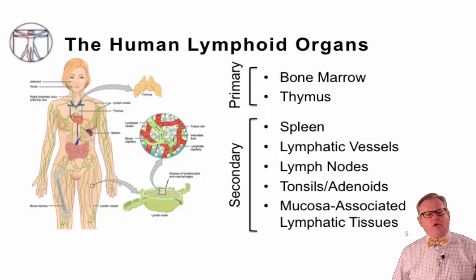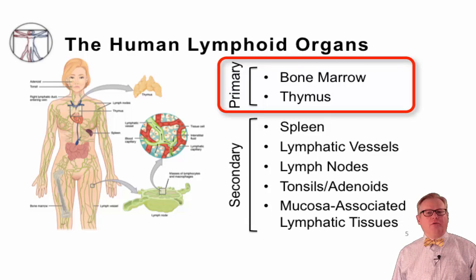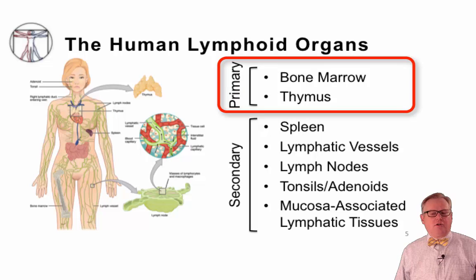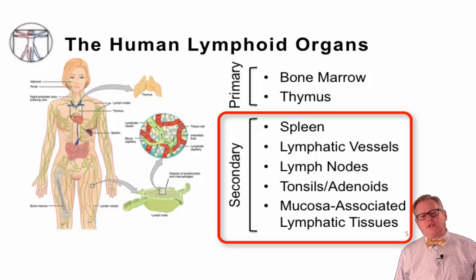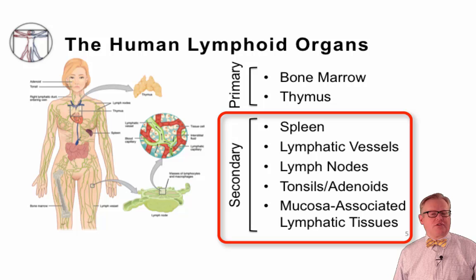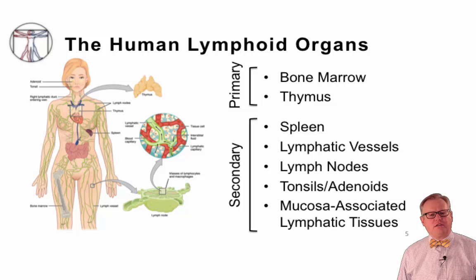The human lymphoid organs can be grouped into two major groups. The primary lymphoid organs are the sites at which all immune cells are developed; these include the bone marrow and the thymus. The secondary lymphoid organs are the sites where immune cells go to complete their development, interact with other immune cells, and generate the adaptive immune response. These include the spleen, the lymphatic vessels, the lymph nodes, the tonsils and adenoids, and the mucosa-associated lymphoid tissue.